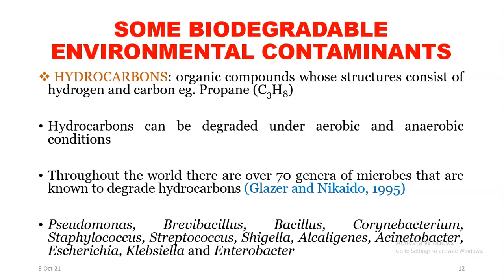Some biodegradable environmental contaminants: first, hydrocarbons — these are organic compounds whose structures consist of hydrogen and carbon, for example propane. Hydrocarbons can be degraded under aerobic and anaerobic conditions. Throughout the world there are over 70 genera of microbes known to degrade hydrocarbons, including Pseudomonas, Brevibacillus, Bacillus, and Corynebacterium.